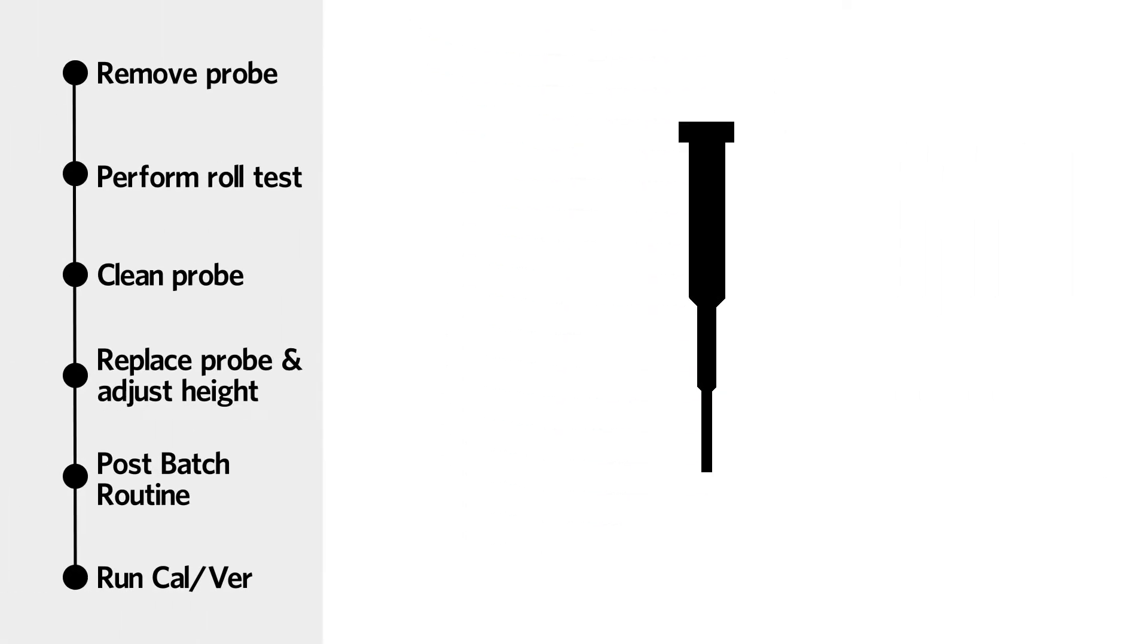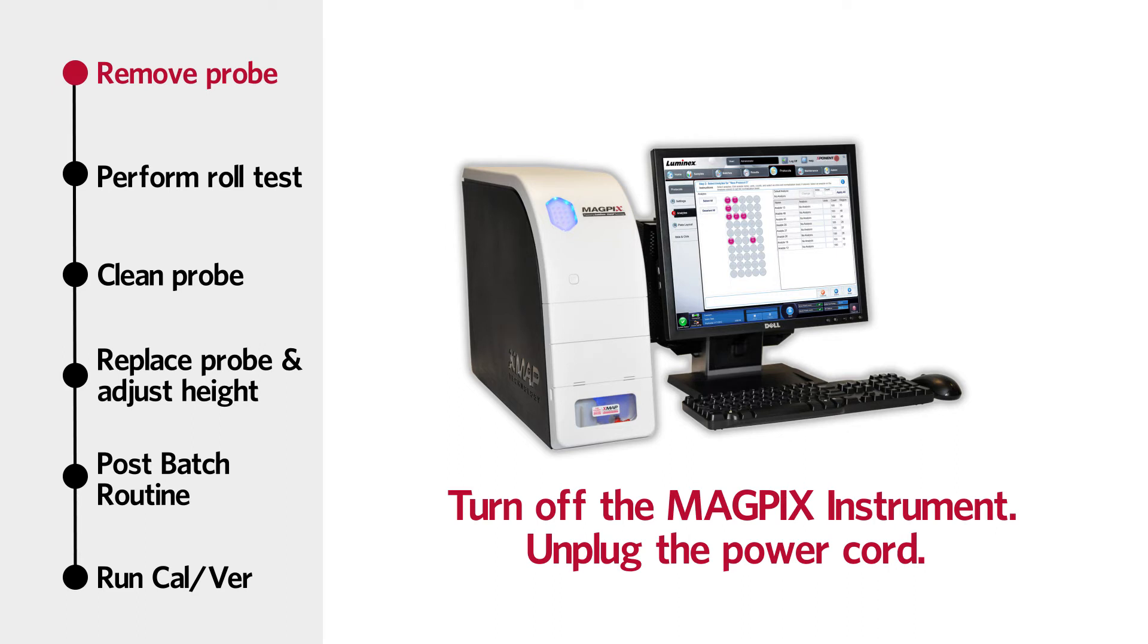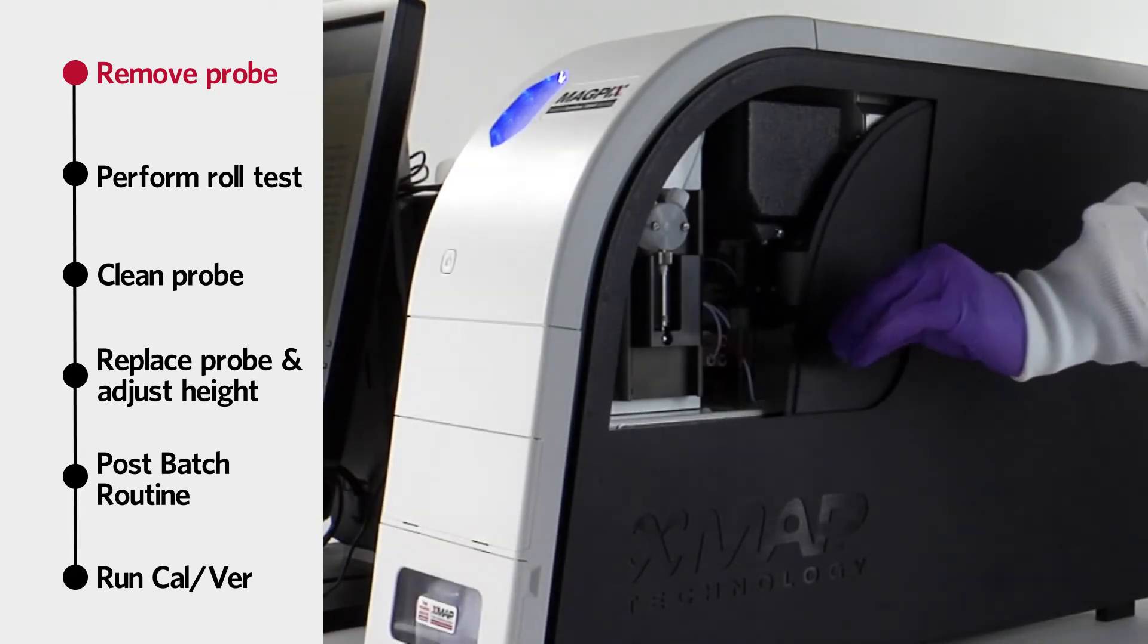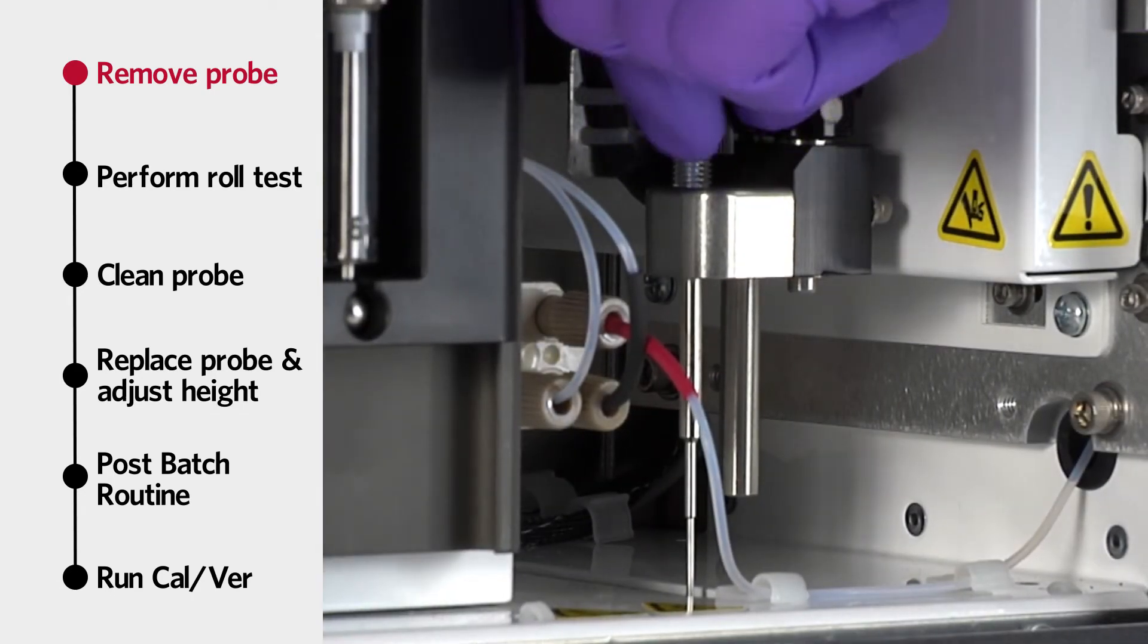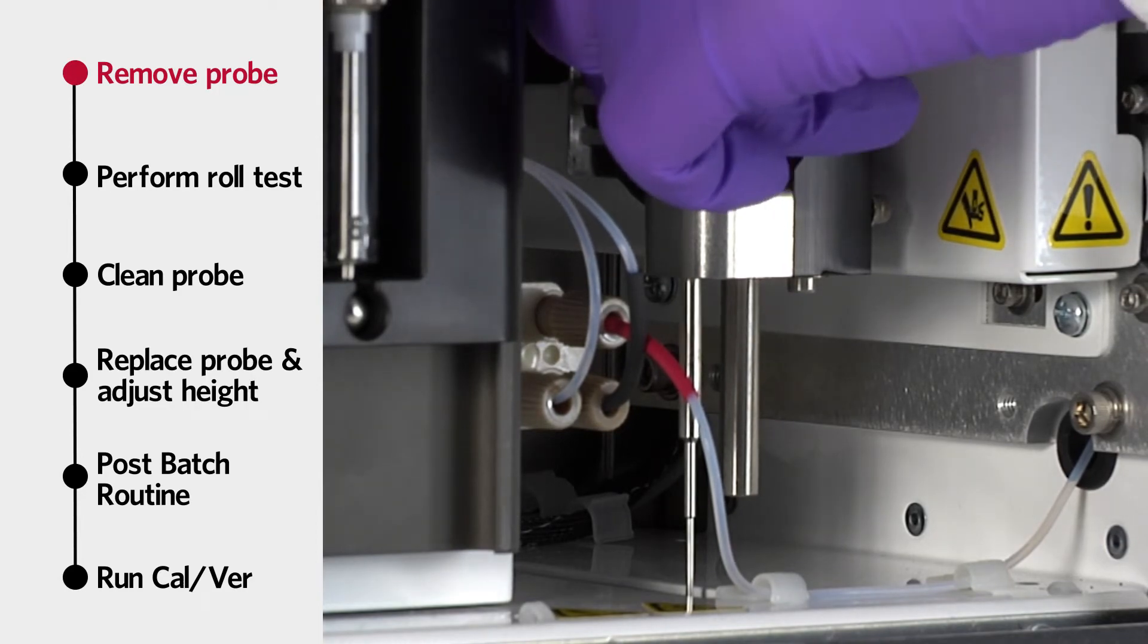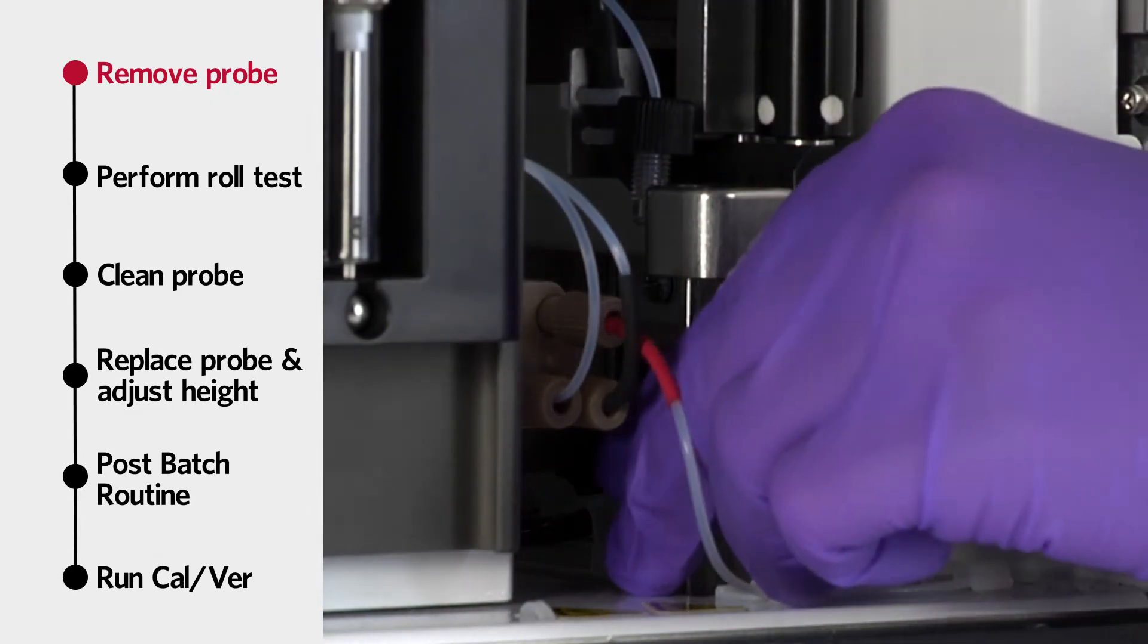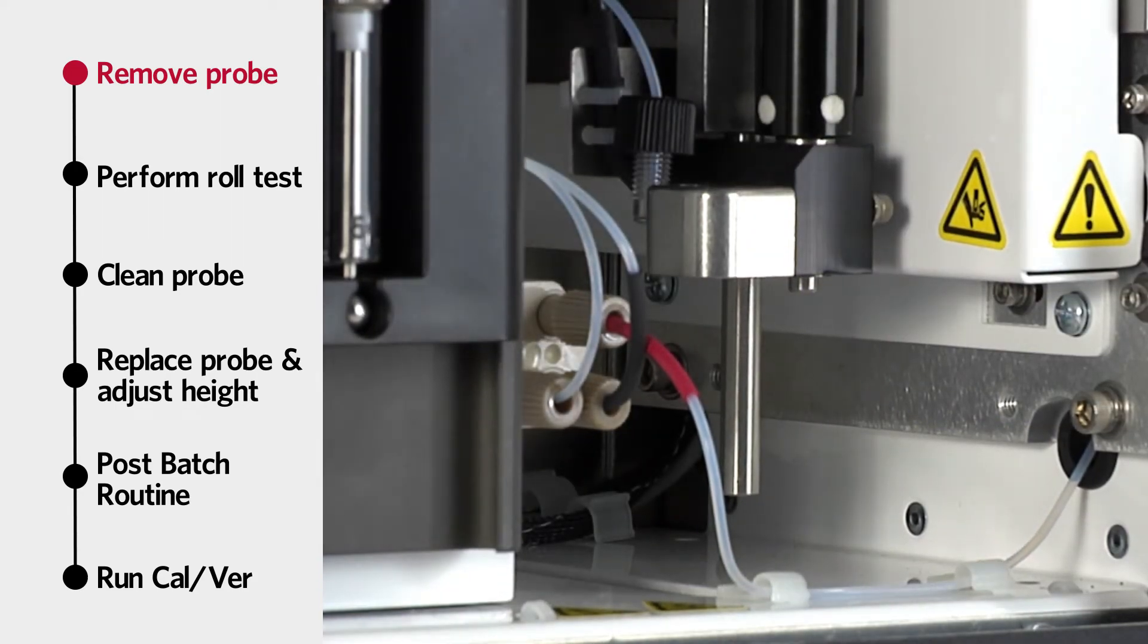To clean the sample probe, remove the probe from the instrument. Please note, turn off the MAGPIX instrument and unplug the power cord before attempting this maintenance procedure. Open the side access door of the MAGPIX. Then completely unscrew the sample probe fitting on top of the sample probe holder. Grasp the sample probe gently and push up. Lift the sample probe out of the instrument.